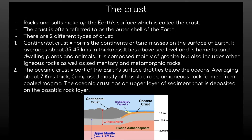The first layer is the crust. Rock and salts make up the Earth's surface, which is called the crust. It is often referred to as the outer shell of the Earth. There are two types of crust: continental crust and oceanic crust. The continental crust forms the continents or land masses on the surface of the Earth, averaging about 35 to 45 kilometers in thickness. It is composed mainly of granite but also includes other igneous rocks, sedimentary rocks, and metamorphic rocks.